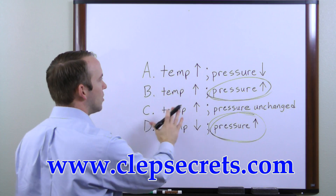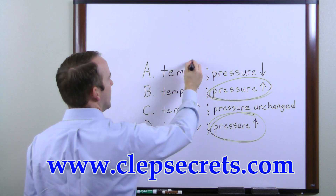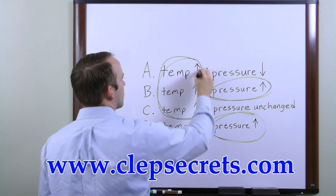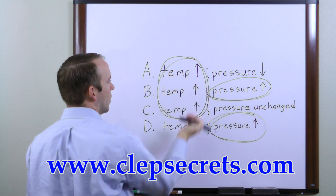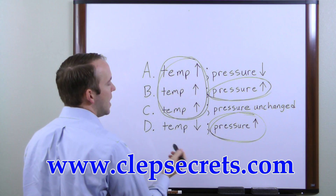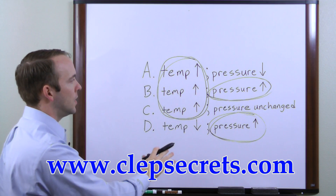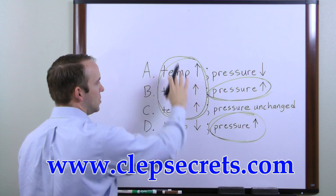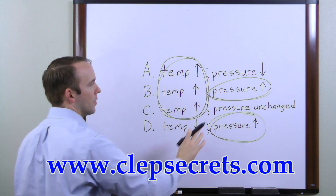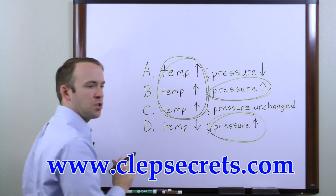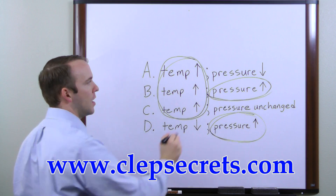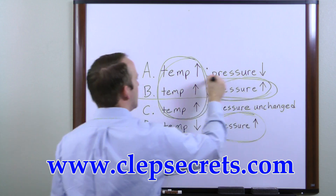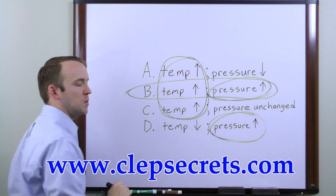Looking back at this, the answer is likely going to be one of the three that have temperature going up. So which answer choice marries the most popular selection for temperature with the most popular selection for pressure? The answer is going to be this one right here — Choice B.